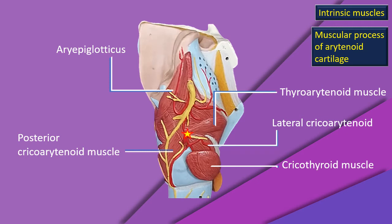One more muscle — the aryepiglotticus. It doesn't reach the muscular process but runs as a continuation of the oblique arytenoid muscle, going upwards into the epiglottis and virtually forming the core of the aryepiglottic fold. There is also a muscle running from the angle of the thyroid into the epiglottis going upwards and backwards — that is the thyroepiglotticus. All these muscles are seen in one single lateral view, with the key landmark being the tip of the muscular process of the arytenoid cartilage.